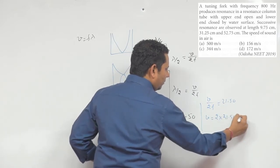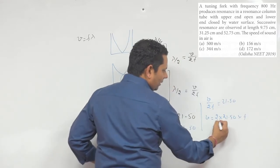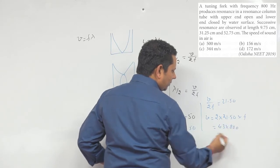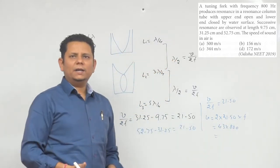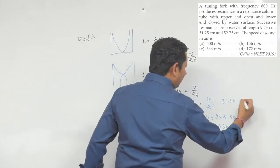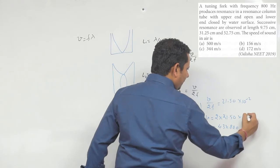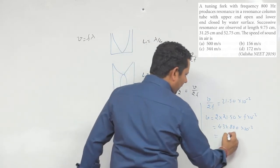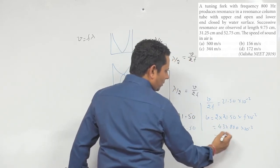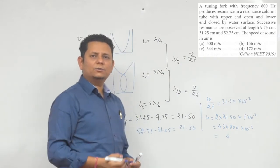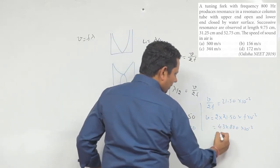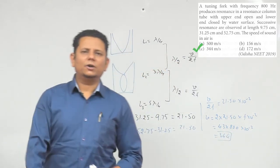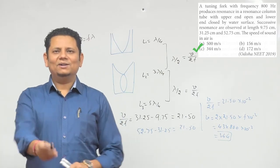In the next case, we have 52.75 minus 31.25. Multiplying this out, we get 24, 24, 344. So this means our velocity of sound is 344 meter per second, hence option number C would be the right answer.